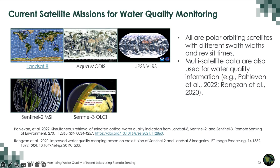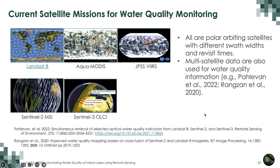The swath widths of all these satellites are shown here: narrow for Landsat, slightly wider for Sentinel-2, much broader for Aqua MODIS, VIIRS, and OLCI. All these satellites are polar-orbiting, going from pole to pole, with ascending and descending orbits and specific times of day for observations. They have different revisit times as we saw. Multi-satellite data are also used for water quality by fusing together multiple satellites and sensors to get water quality parameters.